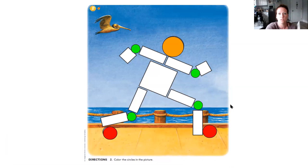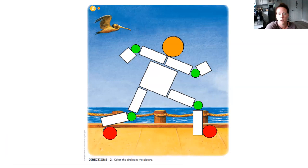Remember when you're talking about circles, they're two-dimensional. Two-dimensional is height, how tall something is, and how wide it is. It's a two-dimensional shape. It's a closed shape. It has a curved line and it's round, and it has no vertices or corners. It's a curved line, it's round, and it's closed.